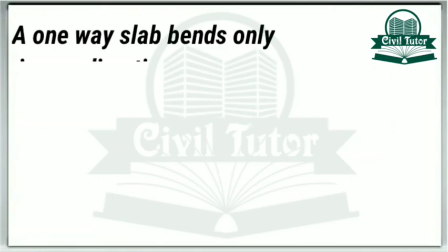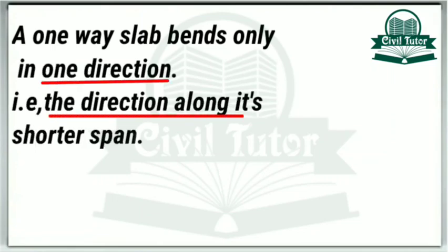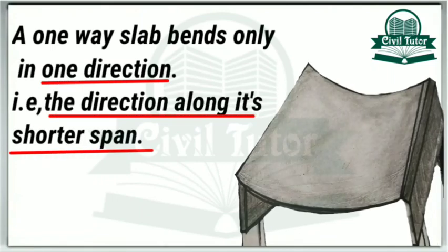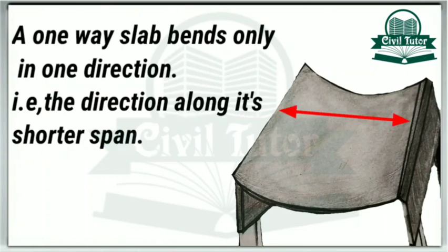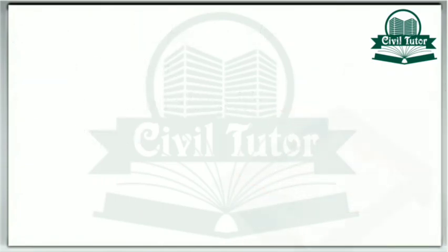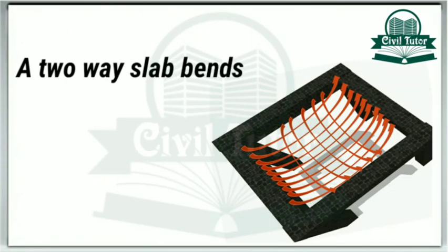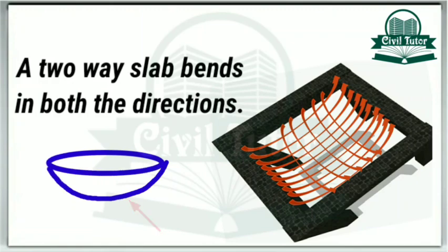A one-way slab bends only in one direction, that is, the direction along its shorter span, as shown in this figure. Whereas a two-way slab bends in both directions, similar to the shape of a bowl.